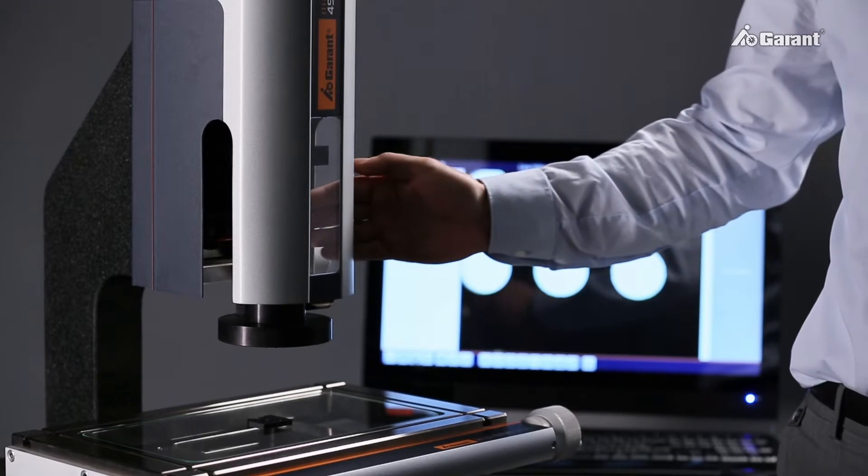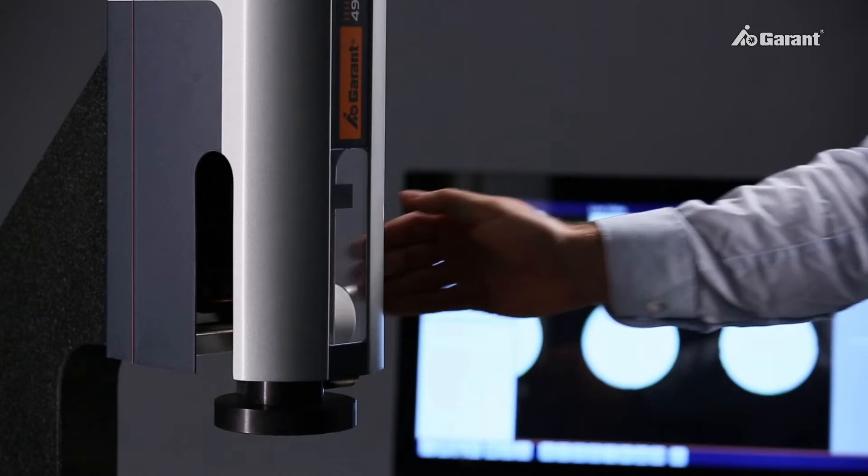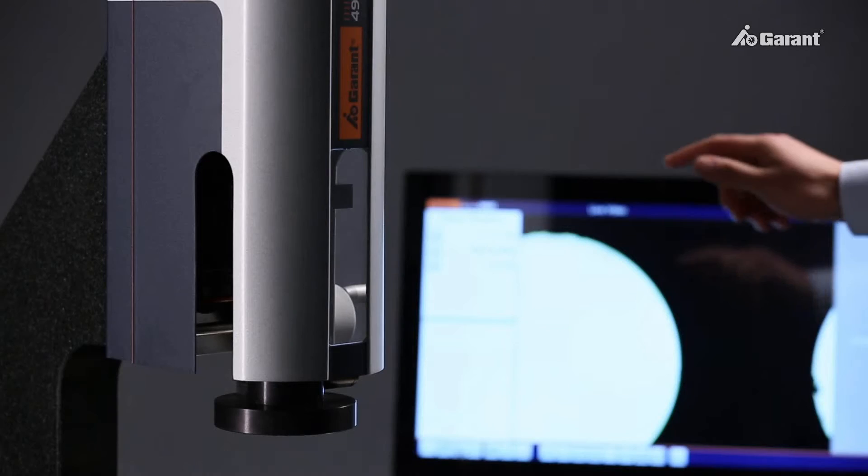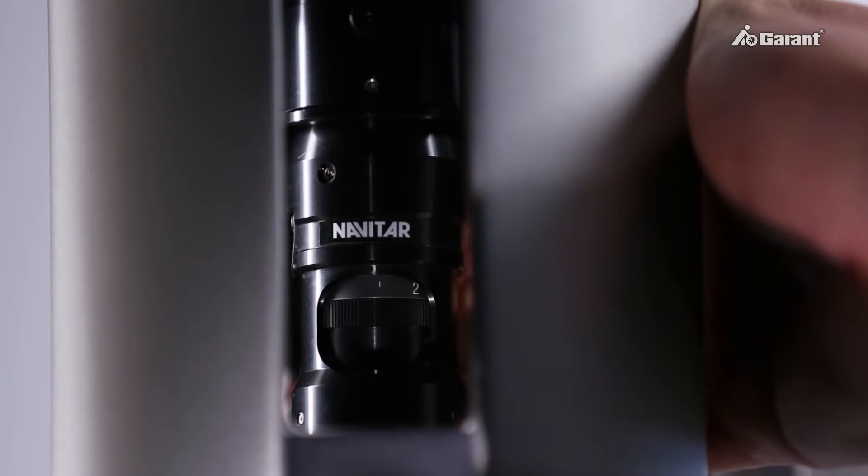A further version of the Garant MM1 is equipped with a manual raster zoom lens. At individual customer request, the Garant MM1 can also be equipped with a motorized zoom lens and configured for your application with additional fixed lenses.